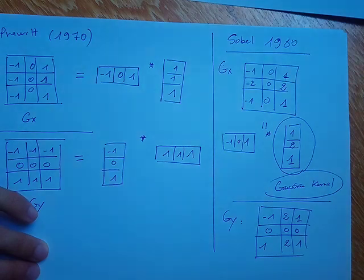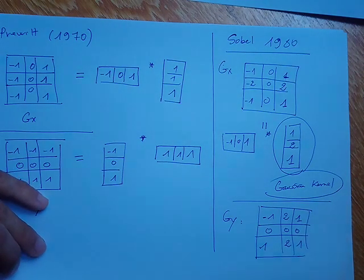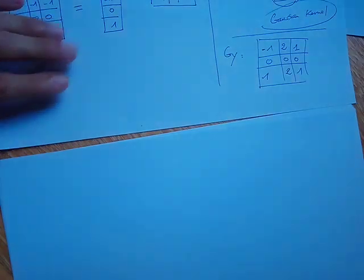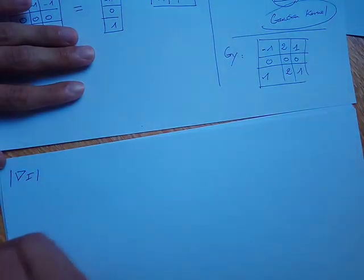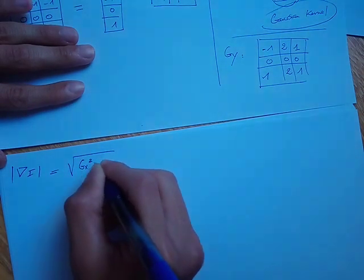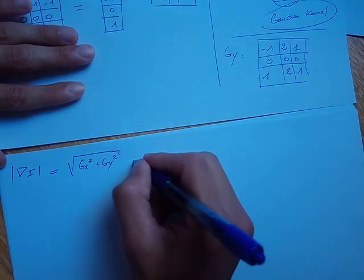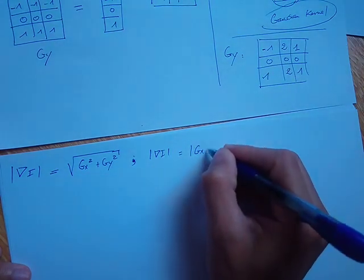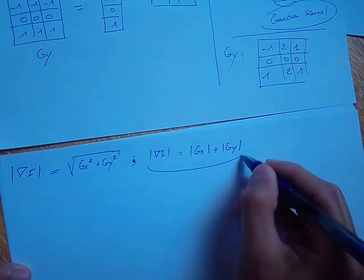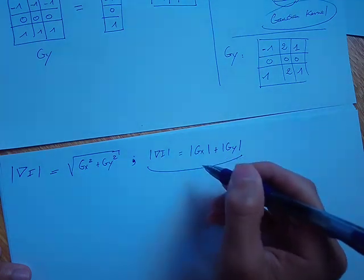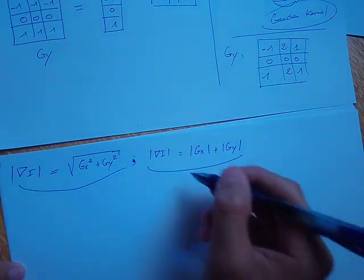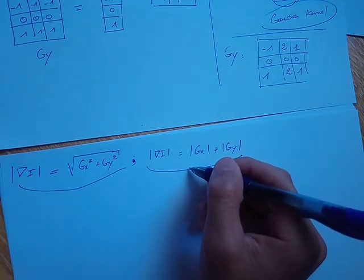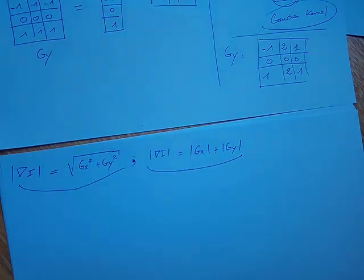Now I will talk about how to approximate the gradient magnitude using the gx and gy components. Given gx and gy, we can approximate the gradient magnitude using the formula: square root of (gx squared plus gy squared). A more practical alternative is to take the absolute value of gx plus the absolute value of gy. This is computationally less intensive and gives results quite similar to the exact formula, so in practice we usually use this approximation.